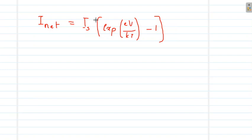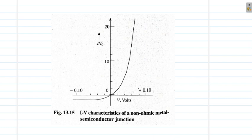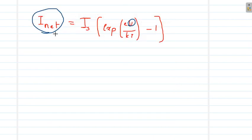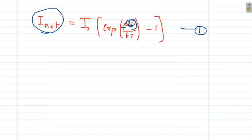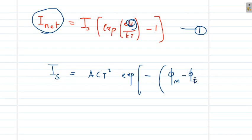The net current across the rectifying contact is: I_net = I_s × (exp(eV/kT) − 1), which looks similar to a diode equation. Under forward bias, the current increases exponentially with applied voltage, following this exponential curve. Here I_s is approximately constant, given by ACT² × exp(−(φ_m − φ_e)/kT), and depends on the work function of the metal and the semiconductor.